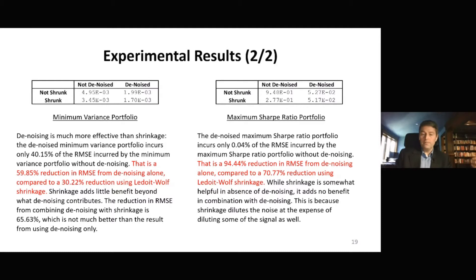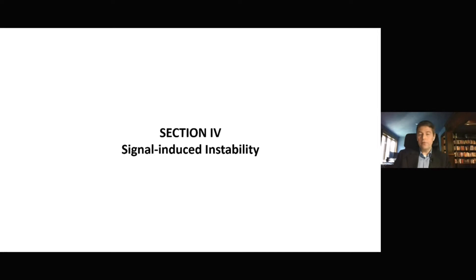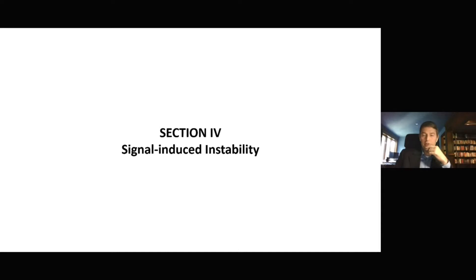Let's go now to the second source of instability. I refer to noise-induced instability, which is related to the number of observations. That's why in the Marchenko-Pastur equations, we found that the range of the eigenvalues was a function of T over N. If T over N is small, then the distribution widens. We need to have many observations for each variable that we utilize in our analysis. How about signal-induced instability? Where does it come from? How can signal be a source of instability?